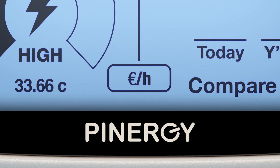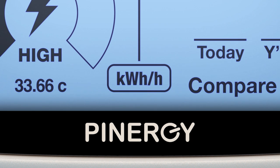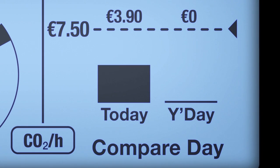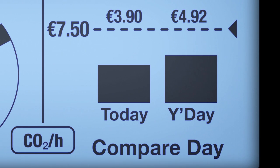The instantaneous numerical value lets you view your real-time usage in three ways: the energy cost per hour as euros, as the kilowatt hour value, or as the carbon dioxide emissions. This graph shows you the current day's electricity usage, which you can compare to your previous day's electricity usage in the bar chart beside it.